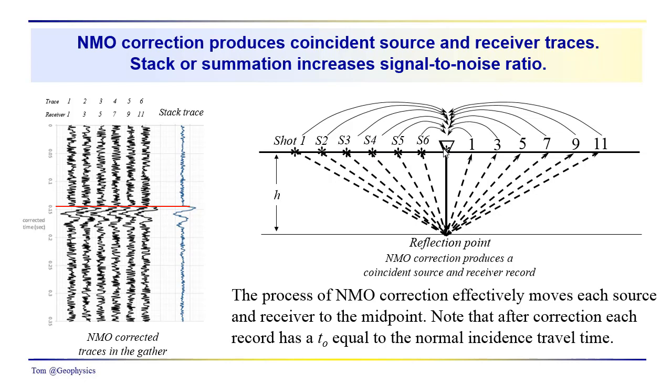We're taking each source-receiver combination and moving each of them to the midpoint. We're taking each record and eliminating the additional travel time from shot 1 to receiver 11, shot 6 to receiver 1. We're pulling all these sources and receivers over to the midpoint, so that the up and down time, the t0 time, all the arrival times are equal to 2h over v.